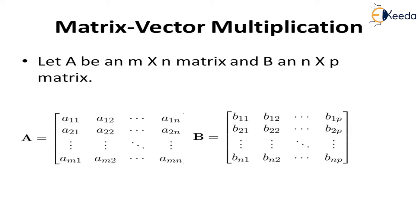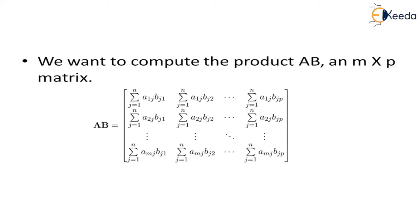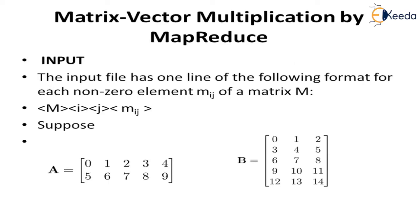We understand the number of columns in matrix A should match the number of rows in matrix B. This is how we perform matrix multiplication, or the product of matrix A and B as per mathematics. Now, how to work with matrix vector multiplication by MapReduce? We should understand what kind of input and output is required.